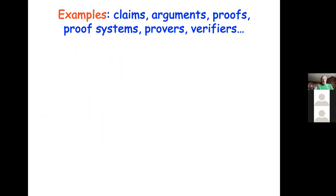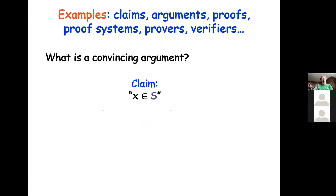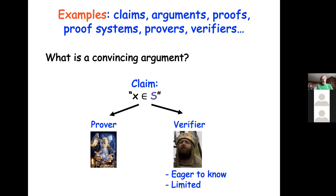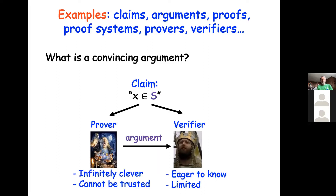I want to talk about proofs and proof systems and start with examples. What you should have in mind is a convincing argument. Our claims are that an element X is in S — say a number is prime. There are two players: the Verifier, like a referee eager to know but who doesn't know how to prove it himself, and a Prover who is going to help the verifier by giving him an argument supporting the claim. The prover may be infinitely clever, but cannot be trusted.